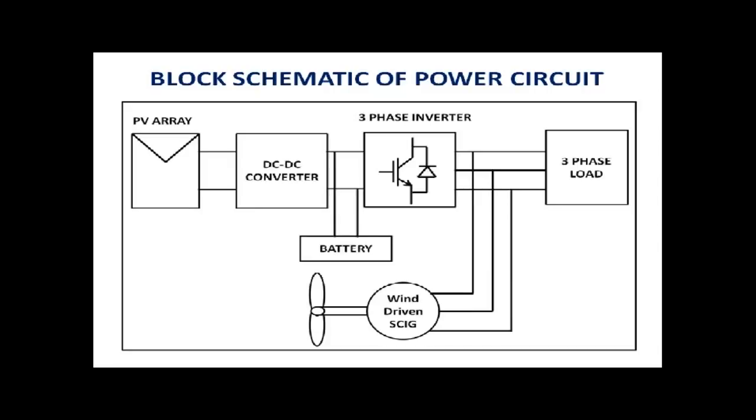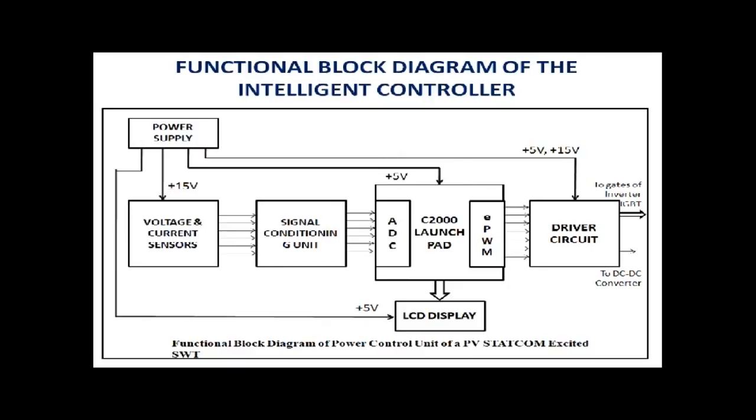The reactive power requirement of IG and load, if any, is provided by the inverter while the active power requirement of the load is shared by IG and PV. The battery maintains the DC link in night and during less irradiation.